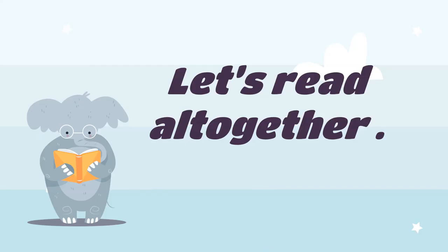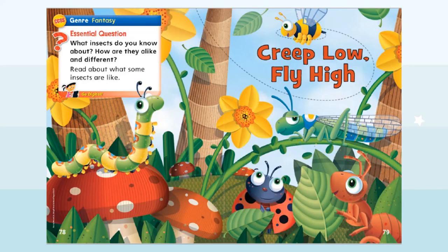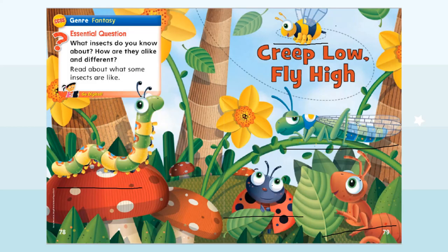I know that all of you know it, but I need to remind you. Now let's read all together — I'm going to read some words for you and explain each page, then we will read the pages together. The title of our lesson is 'Cripl o Fly High.' It talks about insects. What kind of insects can you see in this picture? We have five kinds of insects: the bee, grasshopper, ladybug, and caterpillar.